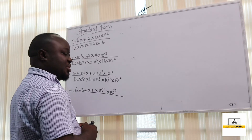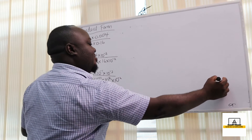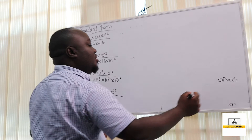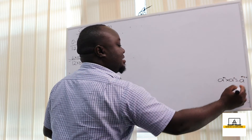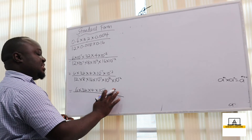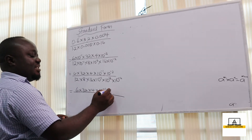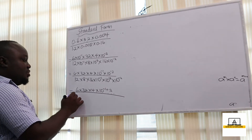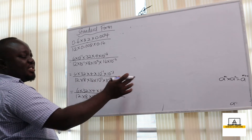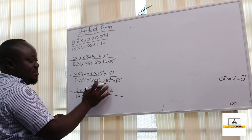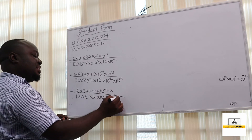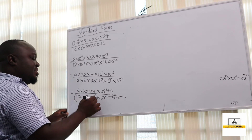This brings to mind indices: if we have a raised to the power m times a raised to the power n, because the bases are the same and the indices are different, we can write it as a raised to the power m plus n. So when the bases are the same we add the indices. Here this gives us 10 raised to the power negative 1 plus negative 3, and for the denominator, negative 1 plus negative 3 plus negative 2.